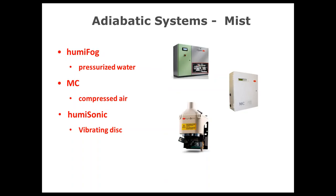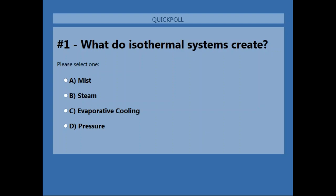Quiz question one: What do isothermal systems create? Your choices are A — mist, B — steam, C — evaporative cooling, D — pressure. You should be able to go ahead and answer that question online now. We'll leave it up for about a minute.